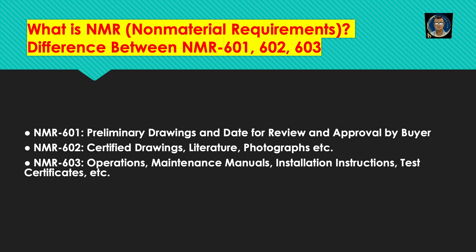What is NMR? Non-material requirements. Difference between NMR 601, 602, and 603: NMR 601 contains preliminary drawings and the date of review and approval by the buyer. NMR 602 contains certified drawings, literature, photographs, etc. NMR 603 is the final one, which includes the operation and maintenance manual, installation instructions, all test certificates, etc.